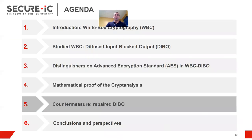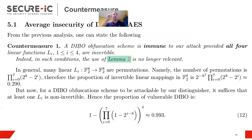So, how to repair the DIBO scheme? So, it's pretty easy. We simply need to ensure that the functions li, so there are four of them, and all of them must have a full rank. And so, in those conditions, the use of the lemma 2 is no longer relevant.